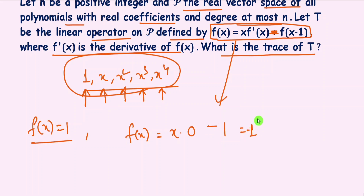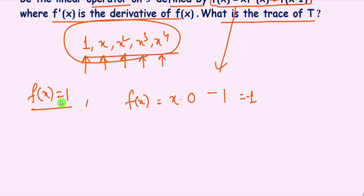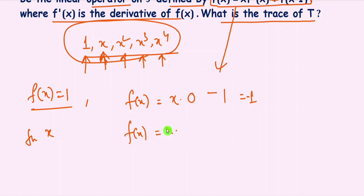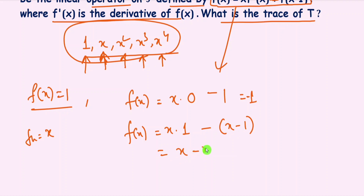For f(x) = x, we get T(x) = x·f'(x) minus f(x−1), which is x·1 minus (x−1), equal to x minus x plus 1, which equals 1.